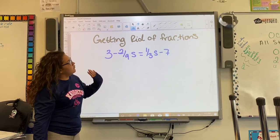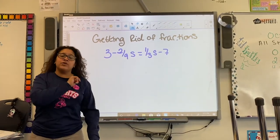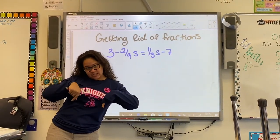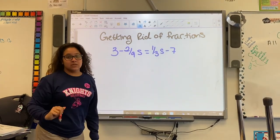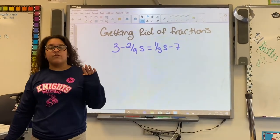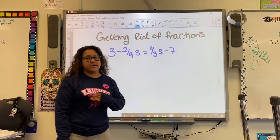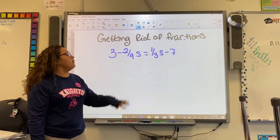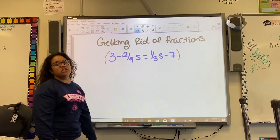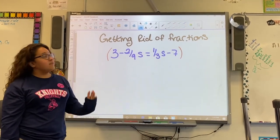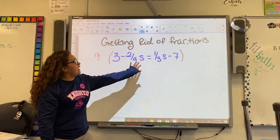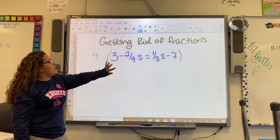Now I'm going to show you getting rid of fractions. For this problem we're going to practice removing fractions using a trick — we multiply the entire equation by the least common denominator so that we can solve it like a regular equation. In this case our least common denominator is 9, because both 9 and 3 go into 9.